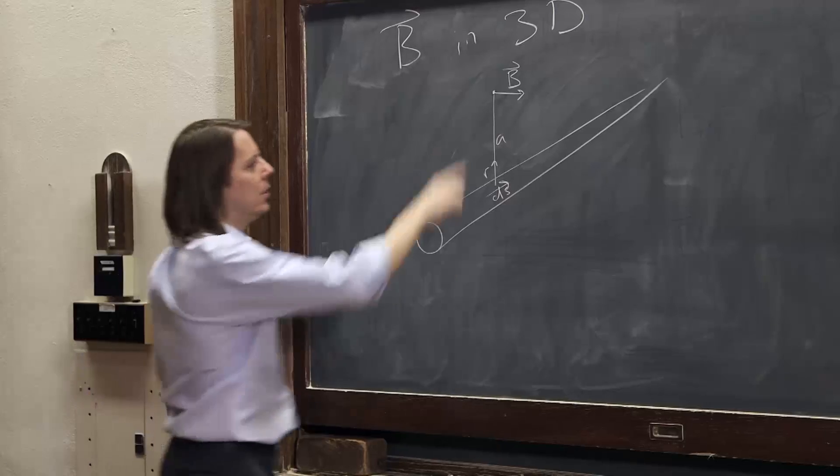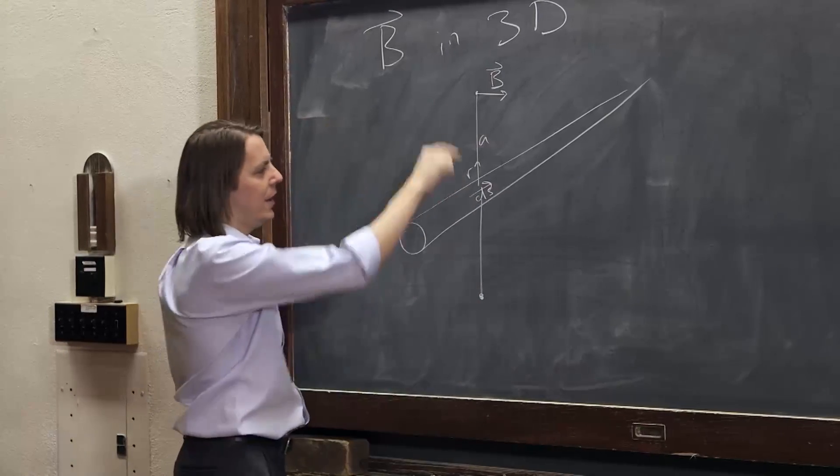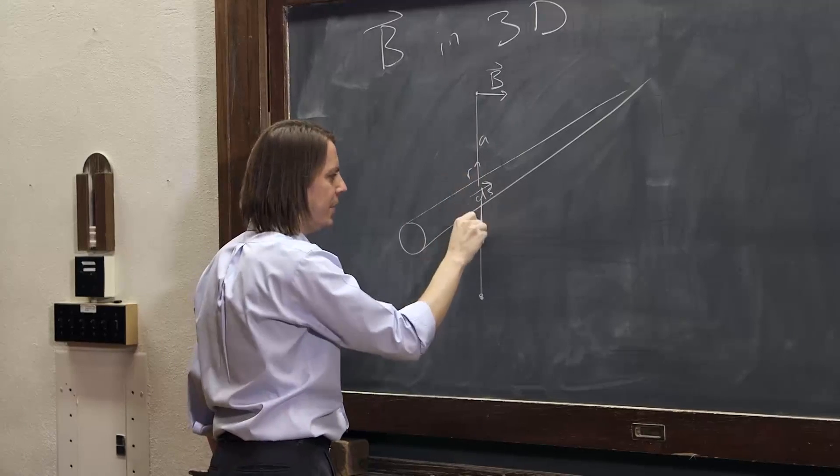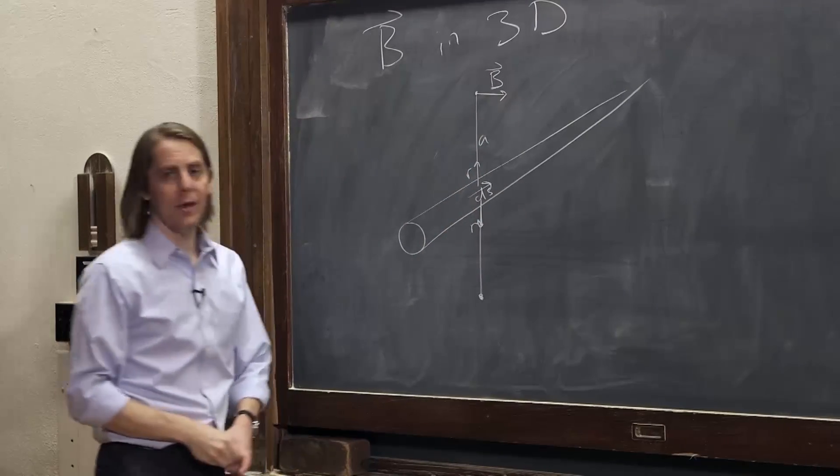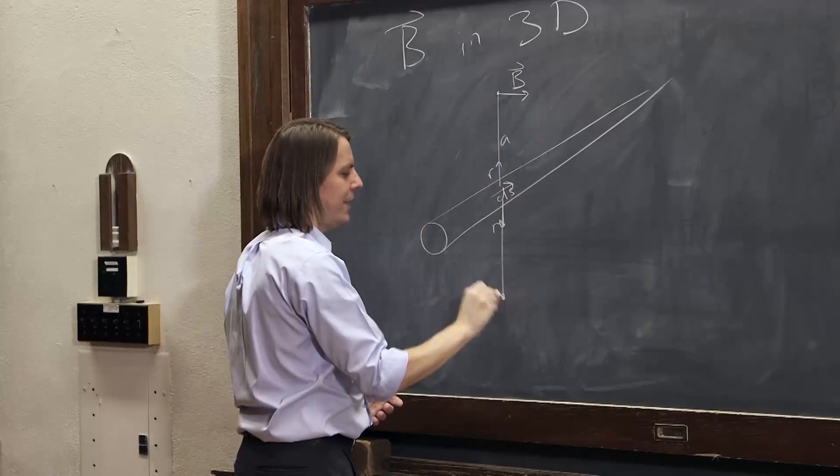What if we were to go down at the other side, down here? We could go a distance A down there. Now R has changed its direction. R is now that way. DS cross R would be into the board, or in this perspective, I'll draw it like that.